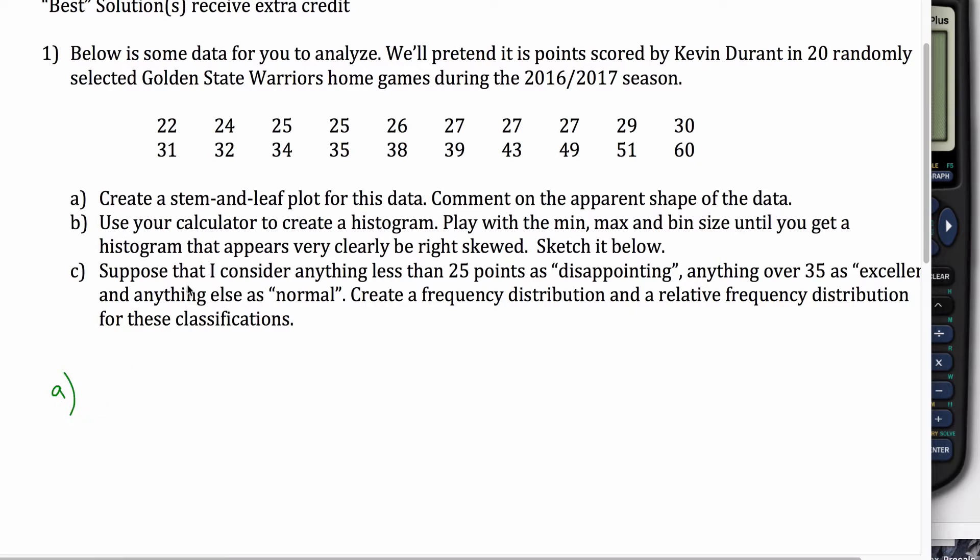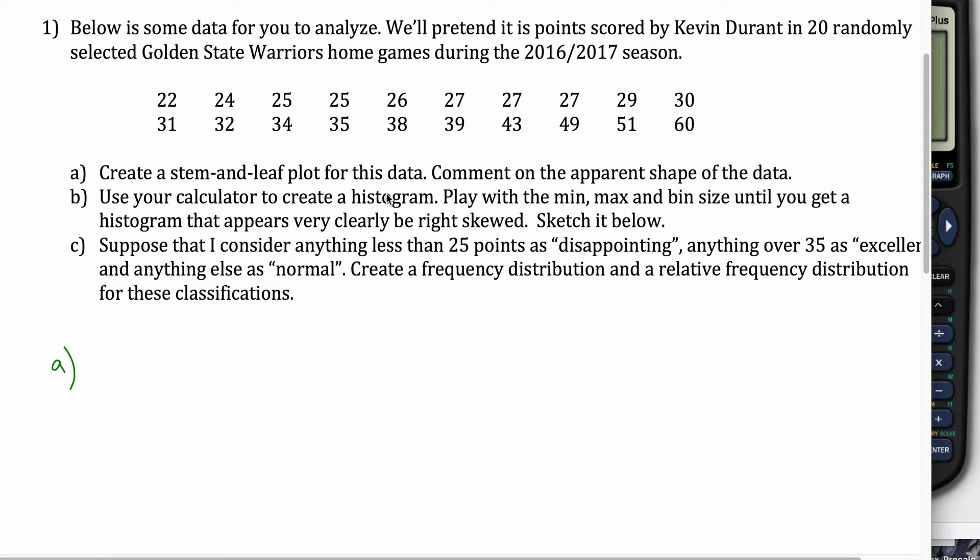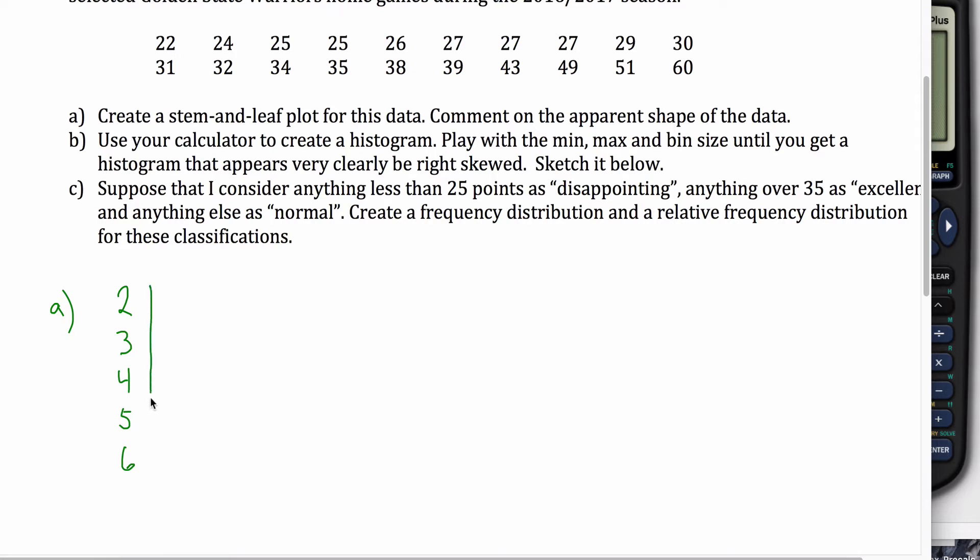The first thing you're asked to do is create a stem-and-leaf plot for the data, and the idea with the stem-and-leaf plot is you want to take the last digit in every data point that you have and use that as your leaf, and then all other digits become your stem. Sometimes you have to round to make that appropriate, but in this case I gave you these two-digit numbers and had it all set up as easily as possible. What you do is look at this and say, it looks like scoring went from 22 up to 60, so the smallest stem I have would be two.